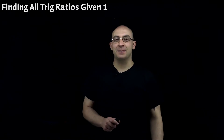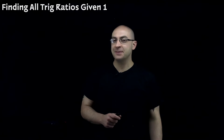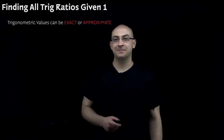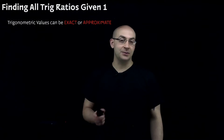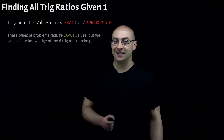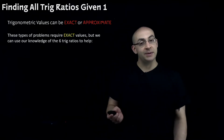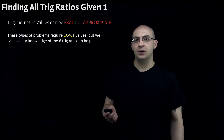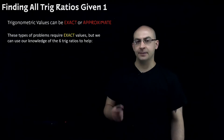Hey everyone, today I want to talk about finding all trig ratios when you're given one of them, and sometimes when you're given none of them. Trig values or trig ratios can be exact or approximate, but in this particular concept they've got to be exact. Oftentimes you'll be given one of those ratios without a picture, so the biggest key is to draw a triangle and use what we know of the ratios to help us out.